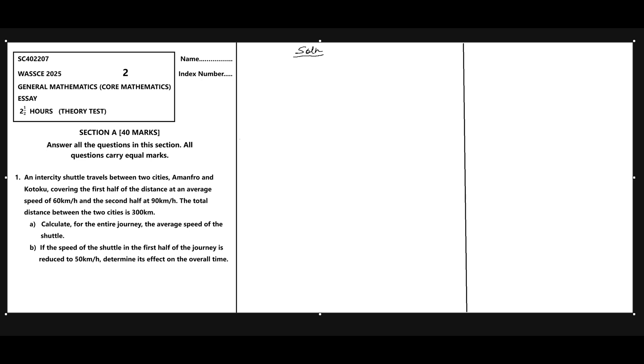WASI 2025 Core Mathematics Paper 2, Section A - the compulsory part, Question 1. An intercity shuttle travels between two cities, Amanfrom and Kotoku, covering the first half of the distance at an average speed of 60 kilometers per hour and the second half at 90 kilometers per hour. The total distance between the two cities is 300 kilometers. Part A: calculate the average speed for the entire journey. Part B: if the speed in the first half is reduced to 50 kilometers per hour, determine its effect on the overall time.